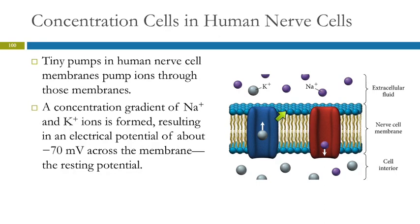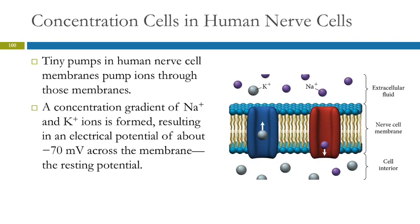Here we've got a membrane — a lipid bilayer. There are pumps that pump sodium out and pump potassium in. The sodium is higher in concentration on the outside, and the potassium is higher in concentration on the inside. Because of that concentration difference, there is an electrical potential across the membrane of about negative 70 millivolts. That's called the resting potential — a potential difference between the outside and the inside of the nerve cell.